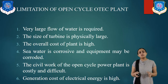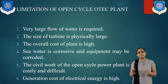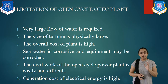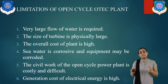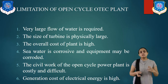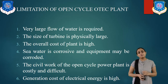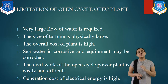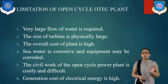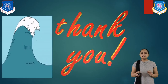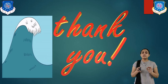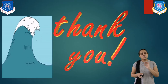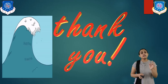The limitations of the open cycle OTEC plant are: a very large flow of water is required; the size of the turbine must be physically very large; the overall cost of the plant is high; sea water is corrosive and equipment may corrode; the civil work of the open cycle plant is costly and difficult; and the generation cost of electrical energy is also very high. The basic thermal cycle is used, and the limitations arise primarily due to the water quality of the ocean.